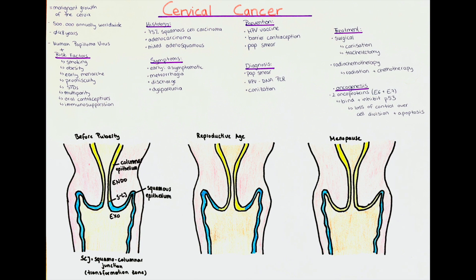Those risk factors include smoking cigarettes, obesity, early menarche — the onset of the first menstruation before the age of 10 years — promiscuity (having many sexual partners), a history of STDs, multi-parity (having had many pregnancies), as well as the use of oral contraceptives and immunosuppression.